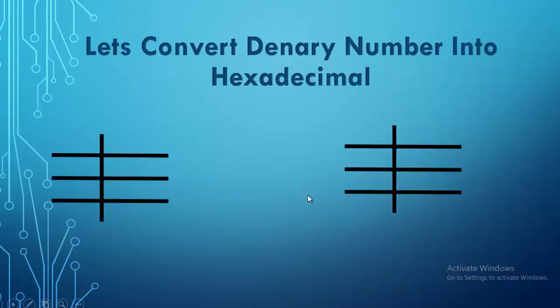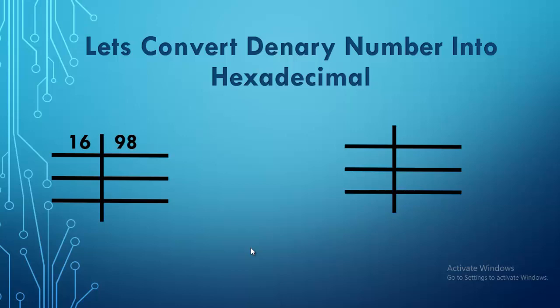First of all, we are going to solve 98 and we need to generate its hexadecimal value. This video can also be used by teachers — they can integrate this tutorial in their class, pause the video, and ask students what the possible solutions are to find the hexadecimal of this denary number. I am using only method number one; there are basically two methods. I am using successive division. Later I will tell you about the second method as well.